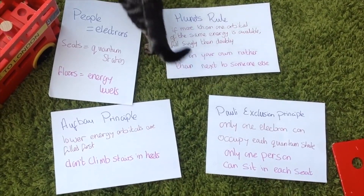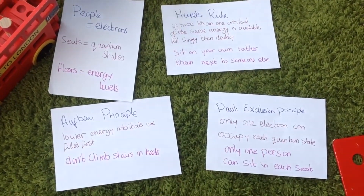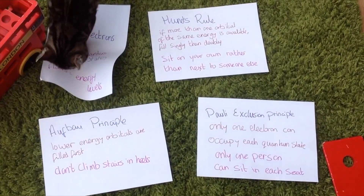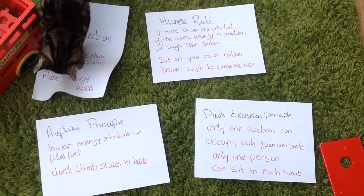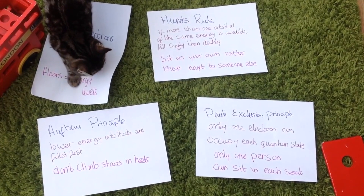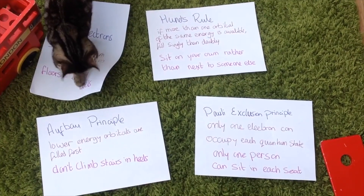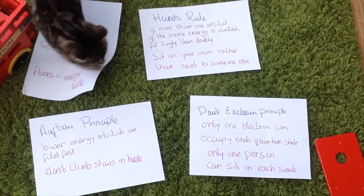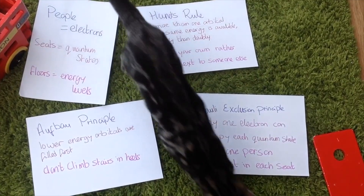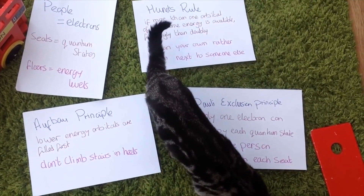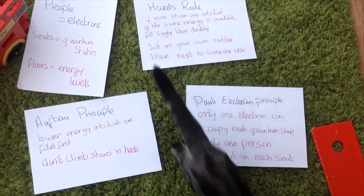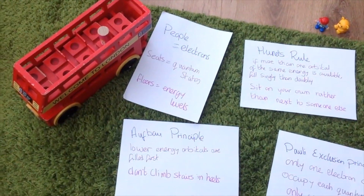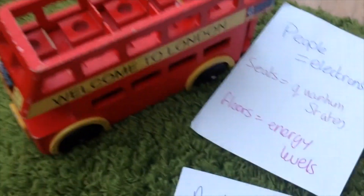Here are the rules again. The Aufbau principle: fill the lower energy levels first — don't climb the stairs. Hund's rule: if more than one orbital of the same energy is available, fill singly rather than doubly — don't sit next to anyone on the night bus. And Pauli's exclusion principle: only one electron can occupy each quantum state — don't sit on someone's lap. I hope you enjoyed watching my little night bus fill up.